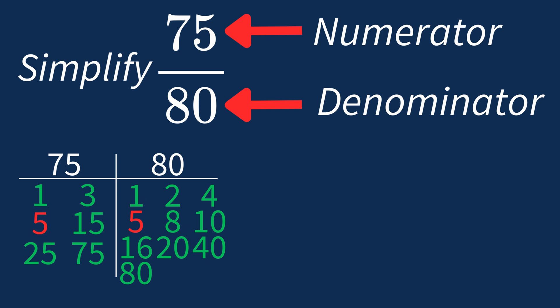This means we can divide both the numerator and denominator by 5 to simplify the fraction. Dividing the numerator 75 by 5 gives us 15. Dividing the denominator 80 by 5 gives us 16.